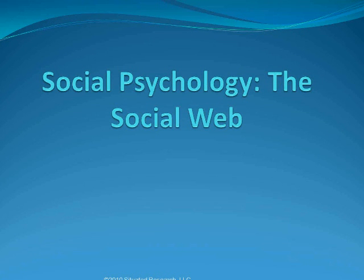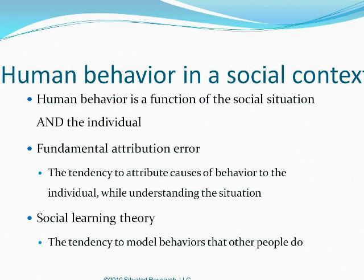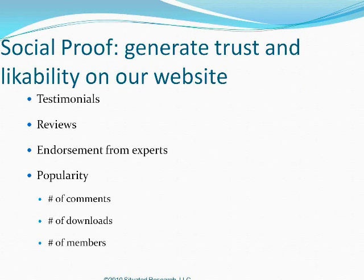Let's dip into social psychology — the social web. Human behavior is a function of the social situation and the individual. There are fundamental attribution errors: the tendency to attribute causes of behavior to the individual while underestimating the situation. Social learning theory is huge — the tendency to model behaviors that other people do. On websites this is called social proof: generating trust and likability through testimonials, reviews, endorsements from experts, and the number of comments on your blog or website.